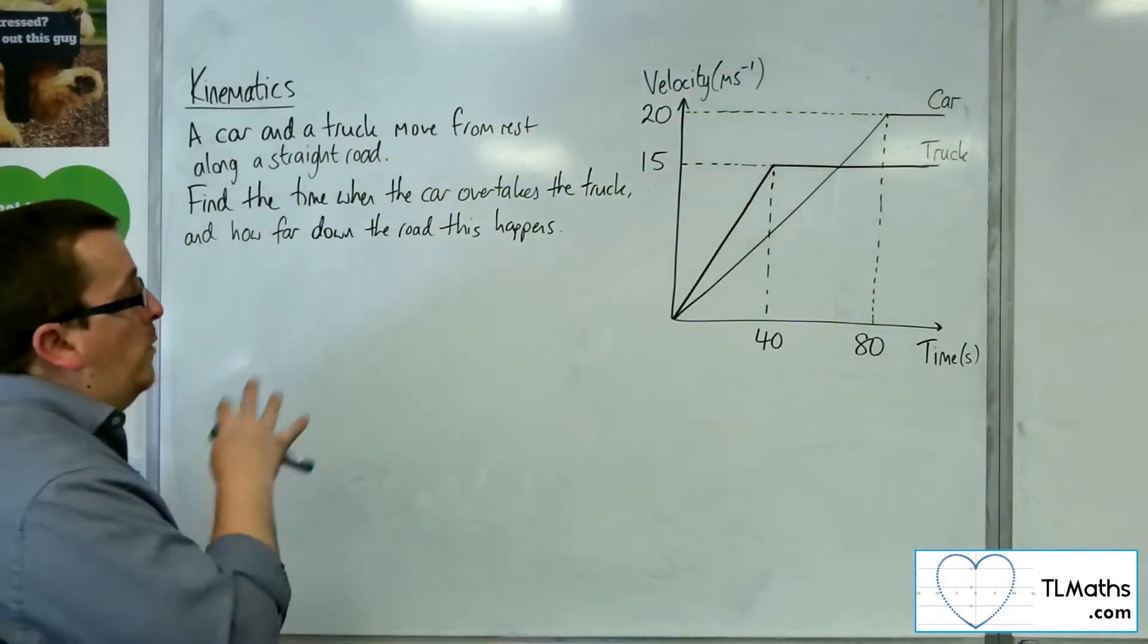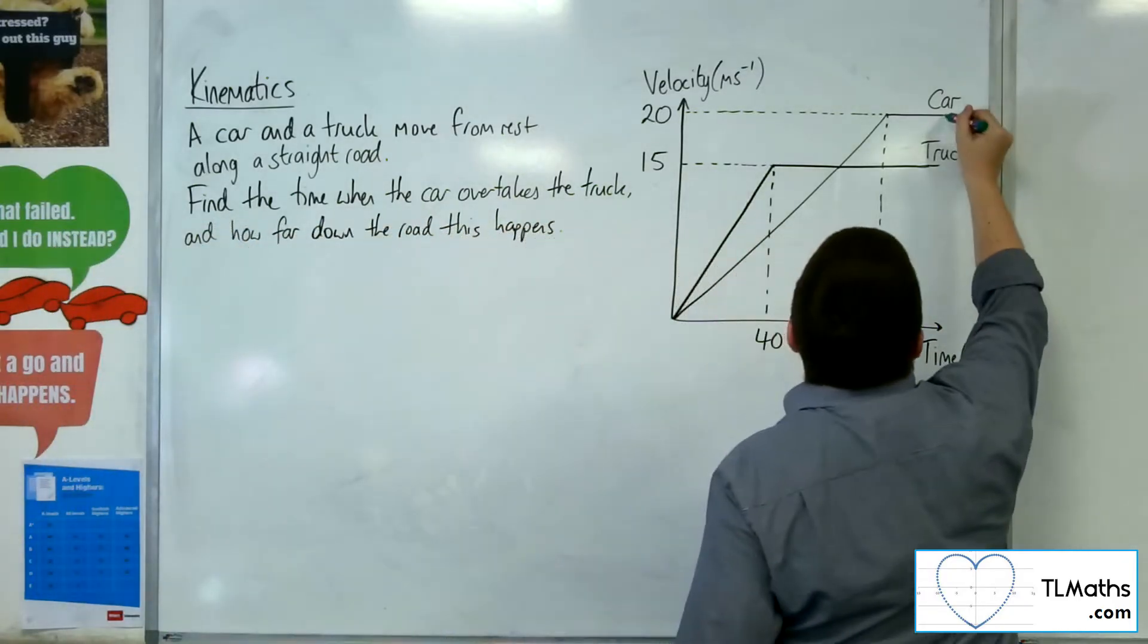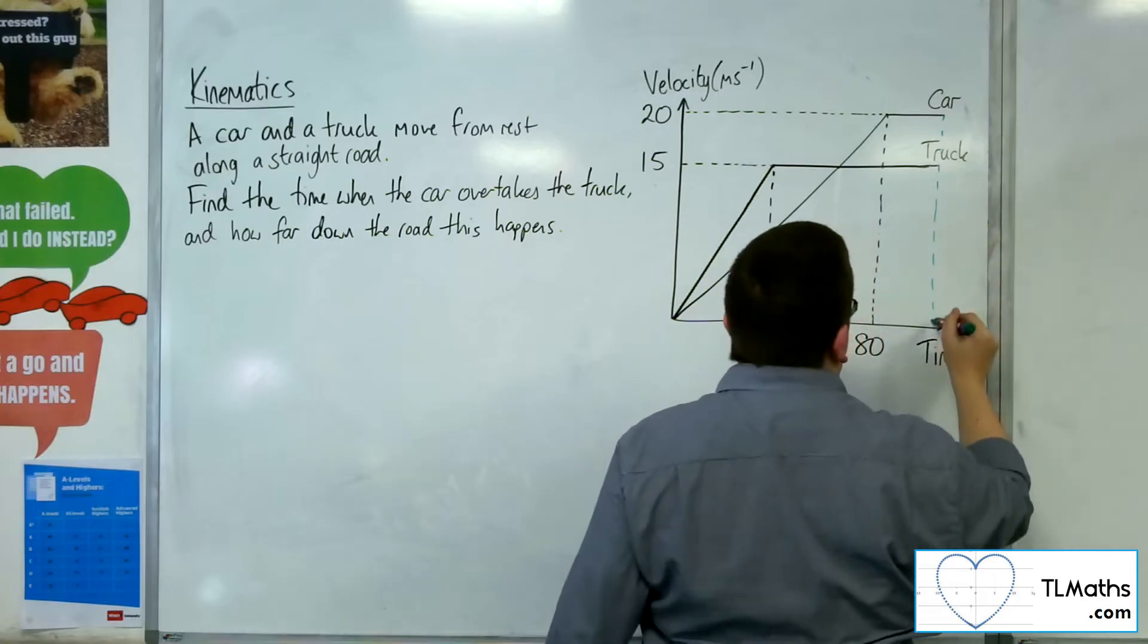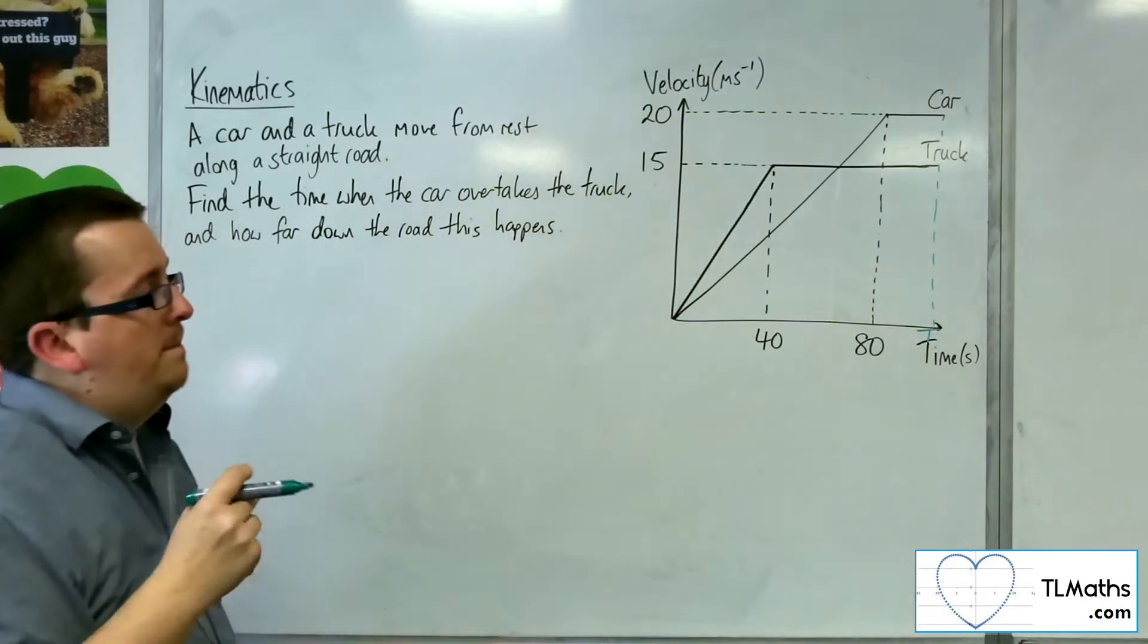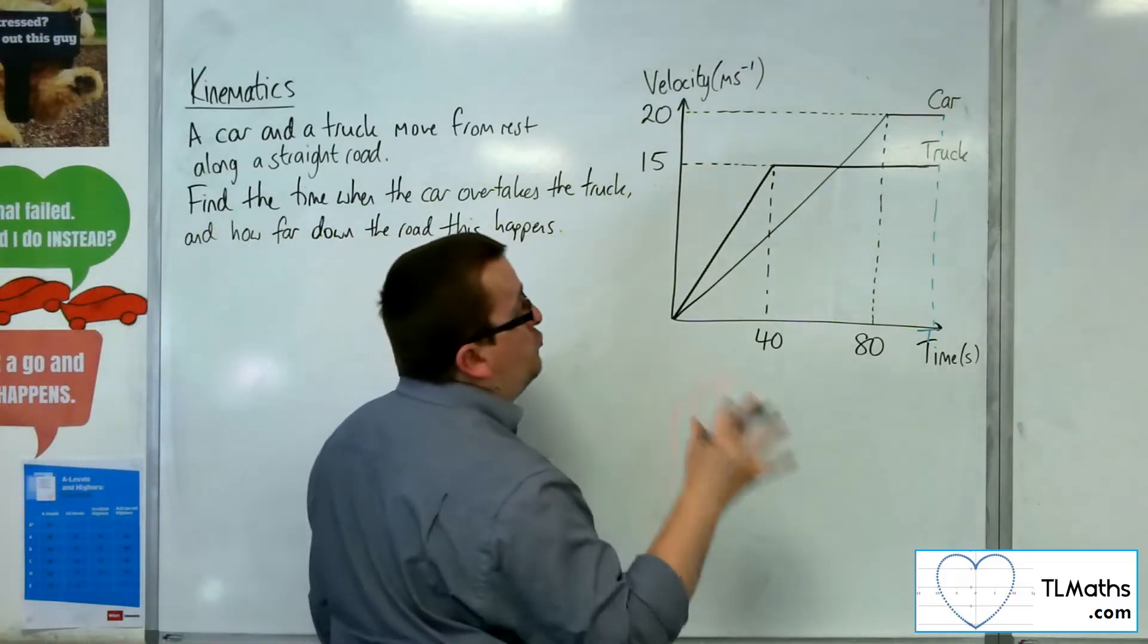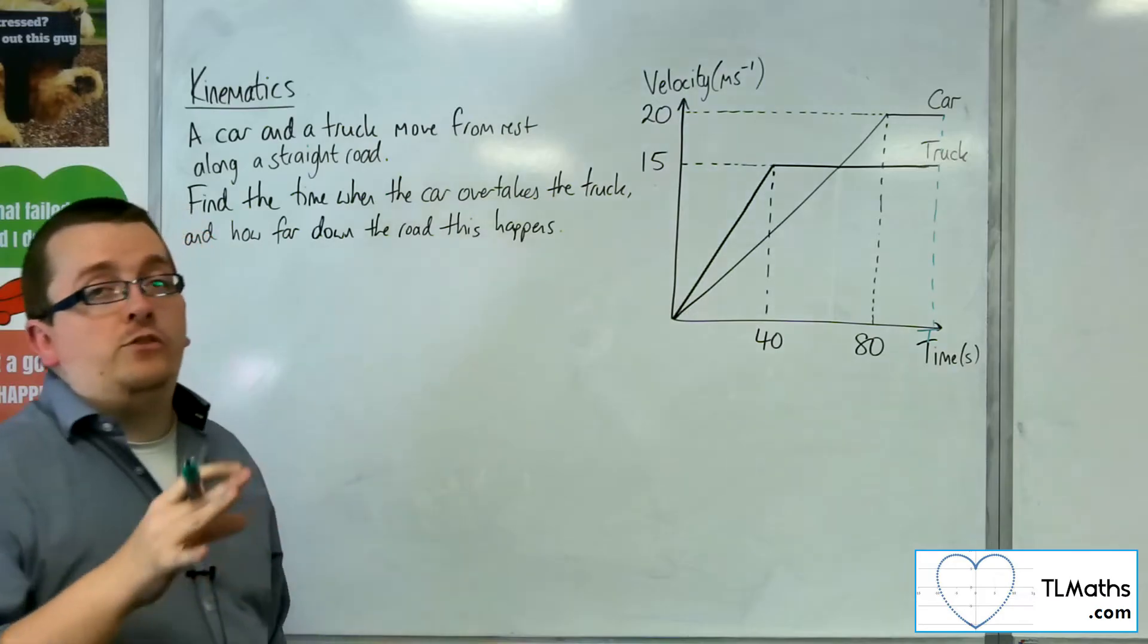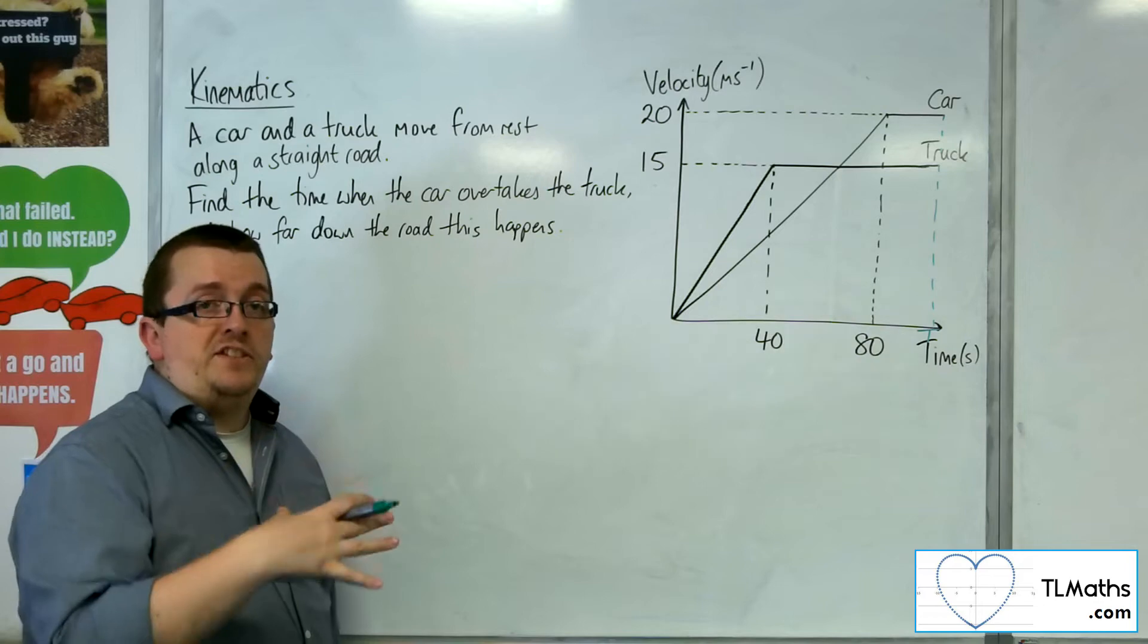So really what we want to do is figure out a time T, some capital T that I'm going to add to my diagram, where the area under the graph for the truck is the same as the area under the graph for the car. Because remember, it's the area that represents the distance.